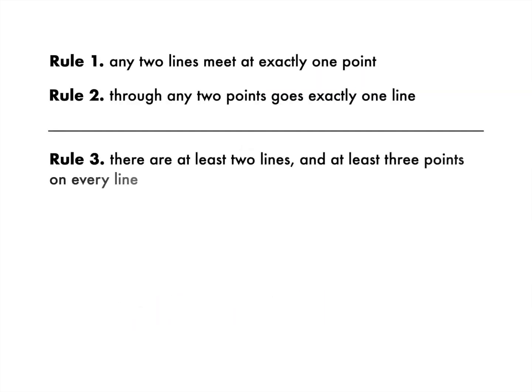As a reminder, these are the three rules that govern projective planes. Any two lines meet at exactly one point. Through any two points goes exactly one line. And the third rule: there are at least two lines and at least three points on every line.